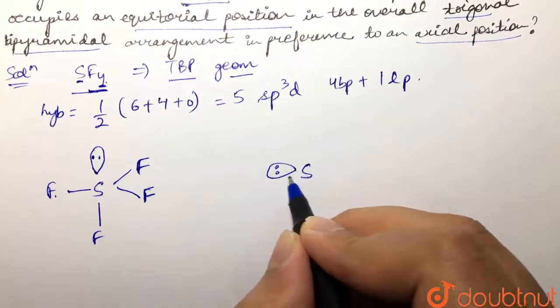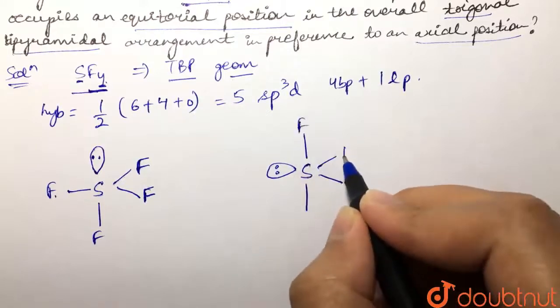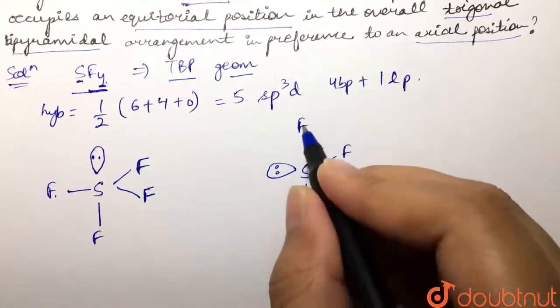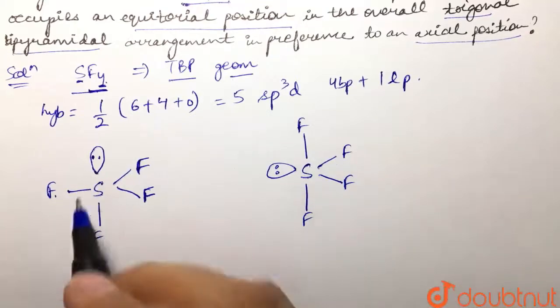The second possibility is if the lone pair is present at equatorial position, with two fluorines at axial position and two at equatorial position.